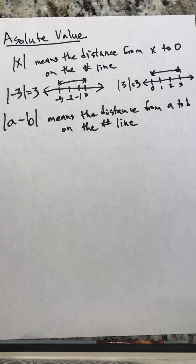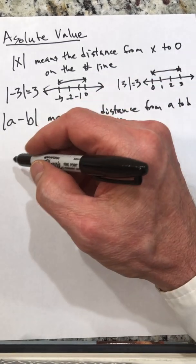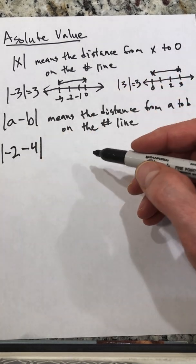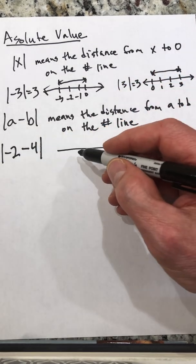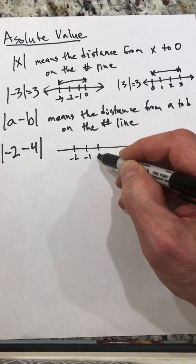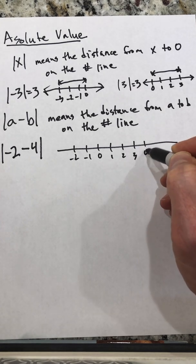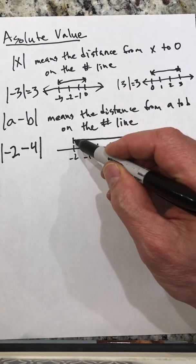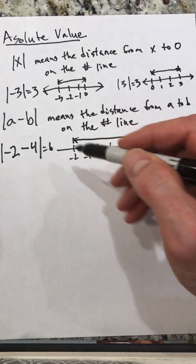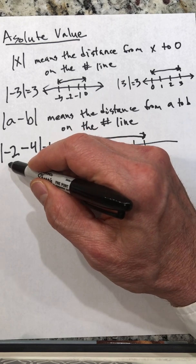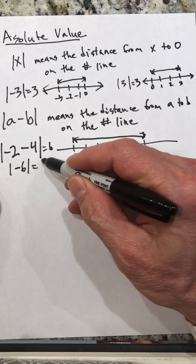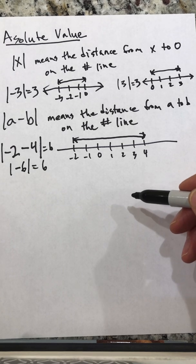Let's take an example. If I take the numbers negative two and four, I write the absolute value of negative two minus four — I want to know what the distance from negative two to four is. On a number line: negative two, negative one, zero, one, two, three, four — the distance from negative two to four is six. That's because the absolute value of negative two minus four equals the absolute value of negative six, which is six.